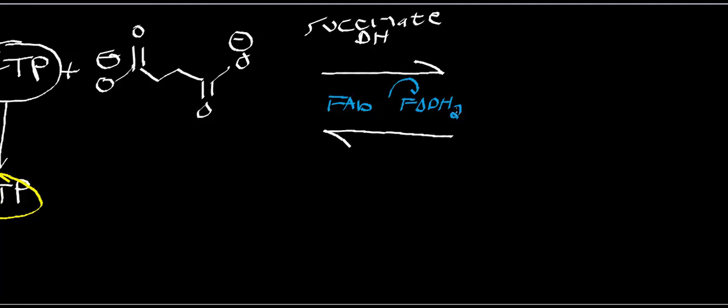If you've heard of complexes 1, 2, 3, and 4 in the inner membrane of the mitochondria — those are the complexes that constitute the respiratory chain — it turns out that complex 2 is succinate dehydrogenase. The FADH2 is really just part of the whole molecule. The FADH2 transports its electrons ultimately to iron-sulfur centers, and then the electrons go to ubiquinone, reducing it to ubiquinol.